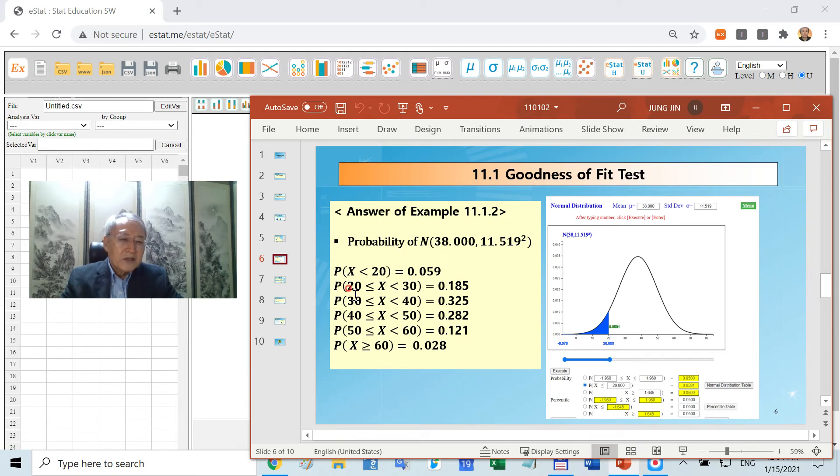For another interval, you switch the normal probability with mean 38 and standard deviation 11.519. You may calculate it using ESTAT. Then calculate all these probabilities. These are the expected probabilities.